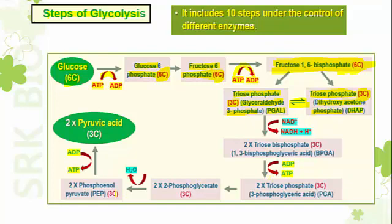When one molecule of PGAL enters into the remaining steps of glycolysis, one pyruvic acid is produced. DHAP is also converted into PGAL, so two PGAL molecules undergo the rest of glycolysis — one directly and one from the conversion of DHAP. Therefore, two molecules of triose phosphate participate in the remaining steps of glycolysis.